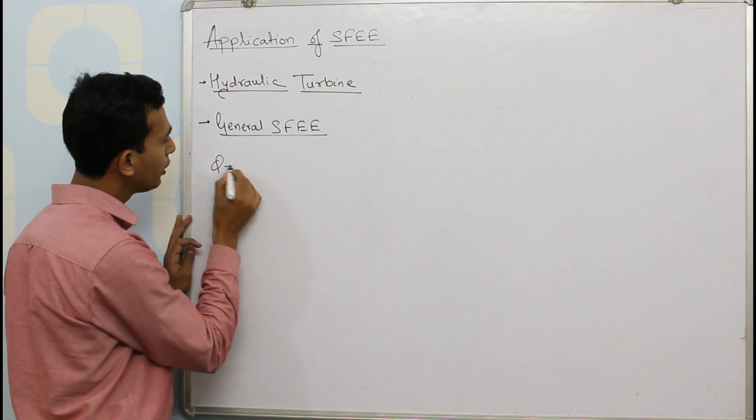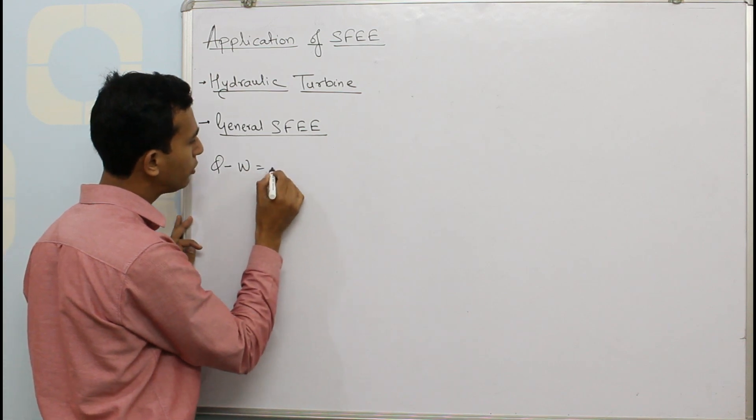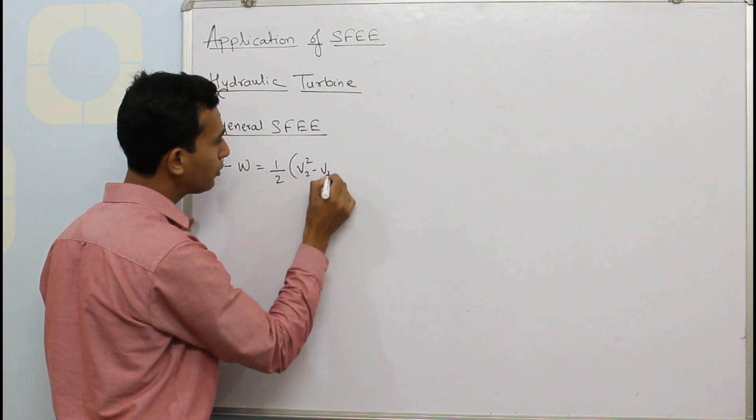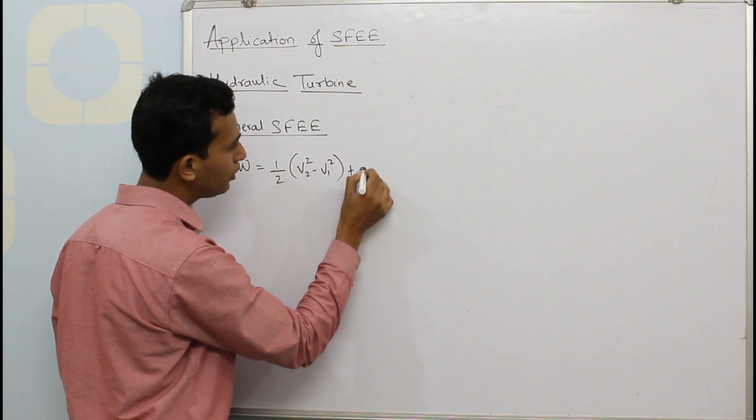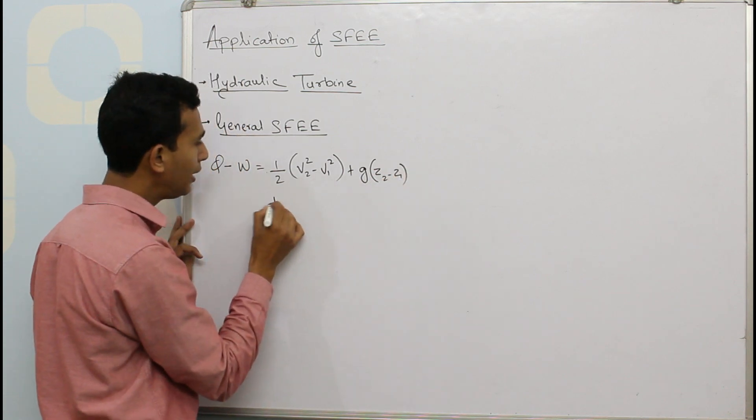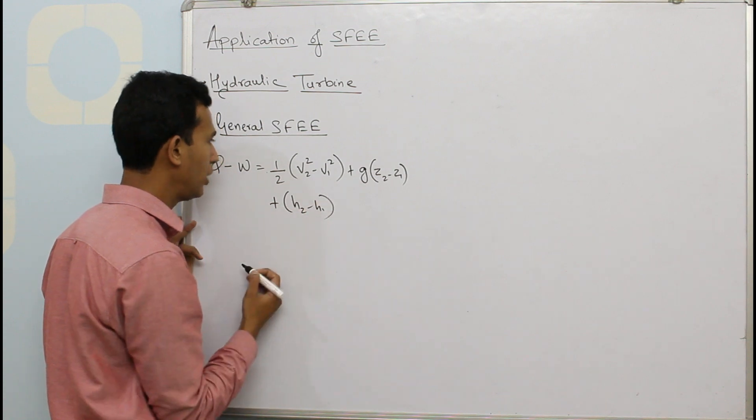It is given as Q minus W equals half into V2 square minus V1 square plus G into bracket Z2 minus Z1 plus into bracket H2 minus H1.